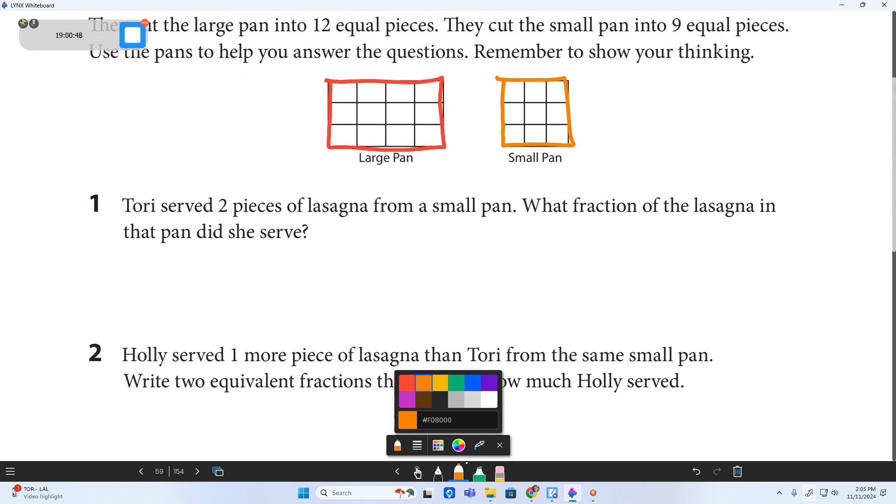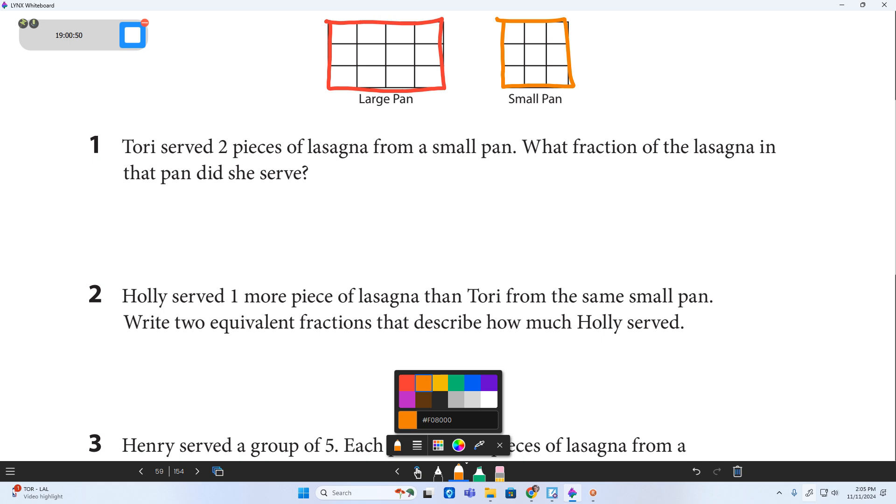Okay, here we go. Number one, Tori served two pieces of lasagna from the small pan. Now, I'm going to go and do a quick drawing, kind of like a three by three picture to show that small pan. And she served two pieces. I'm going to shade two of them. I think having a visual is a really powerful thing. What fraction, so our answer needs to be in a fraction, what fraction of the lasagna in the pan did she serve?